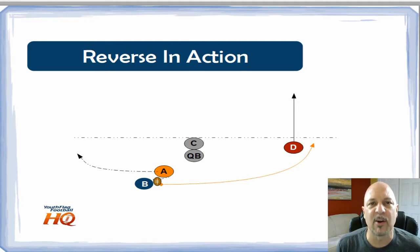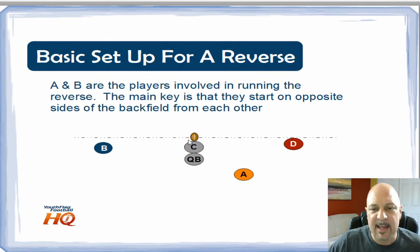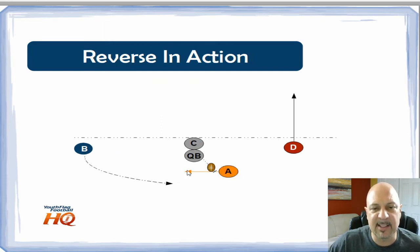The difference is that in the end around there is no running back. We are lining up in an empty backfield on an end around. The misdirection there is that it's an empty backfield and it shows that you are in a passing formation, and then suddenly you are running the ball. Whereas this shows that you are in a pass-run formation, you're running the ball one direction and suddenly running the ball in the other direction.